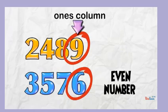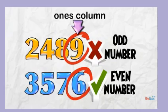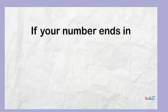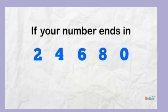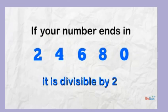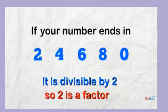If you have an even number, then it is divisible by 2. Odd numbers are not. So if your number ends in 2, 4, 6, 8, or 0, you know — just from a glance — it is divisible by 2. And if a number is divisible by 2, then 2 is a factor.